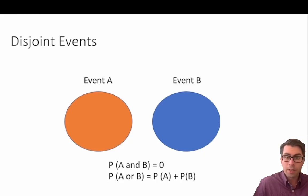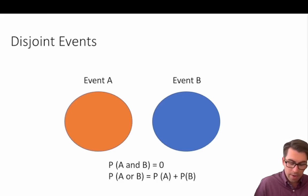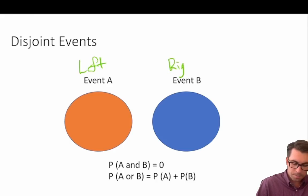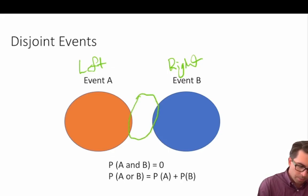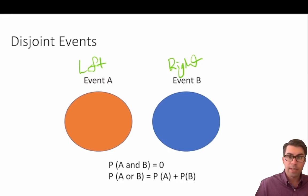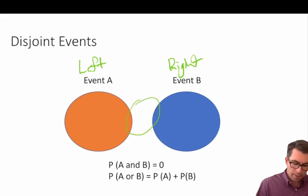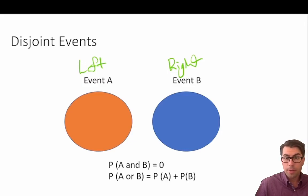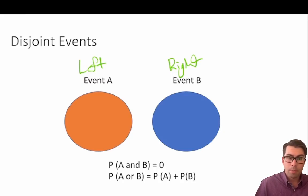For those who are more visually inclined, let's visualize what a disjoint event looks like. We have event A and event B — going back to our sock example, the left sock and the right sock. What we notice is there is no instance where they overlap; they are completely disjoint from each other. So the probability of A and B — or the probability of left and right occurring at the same time — is equal to zero. The probability of A or B is simply the probability of A plus the probability of B.